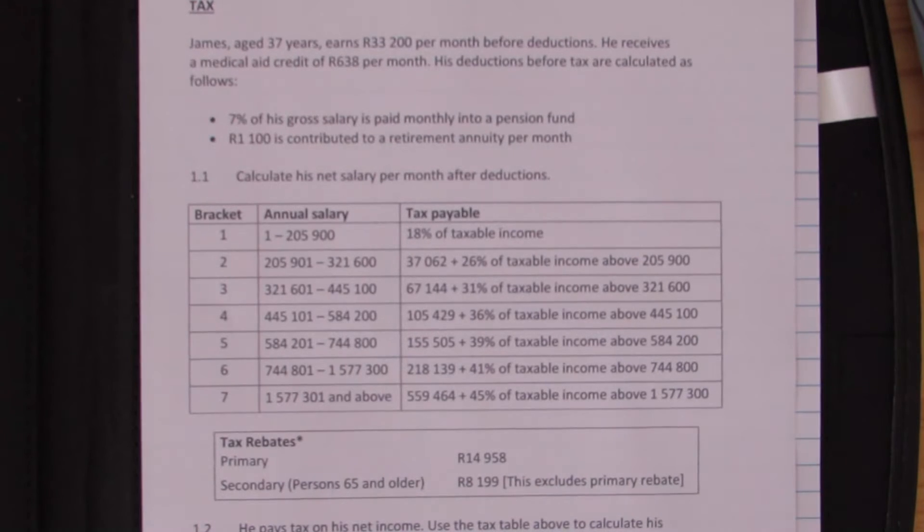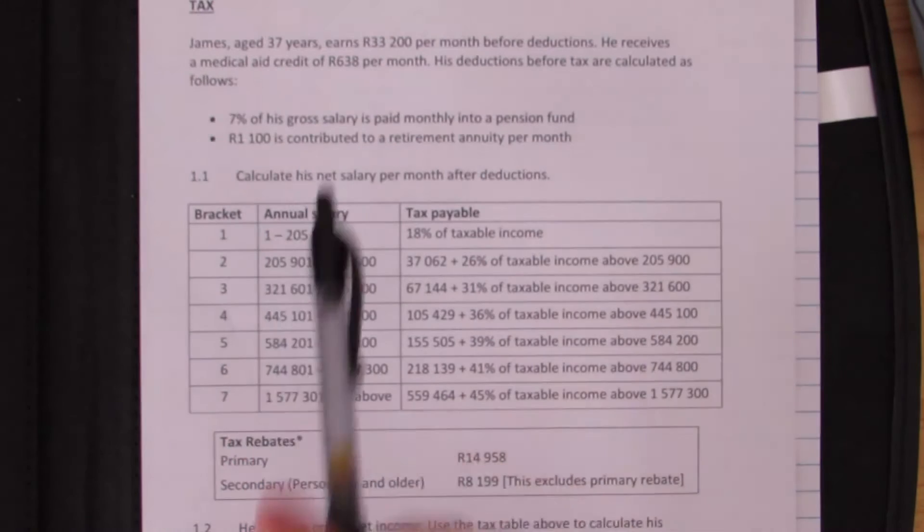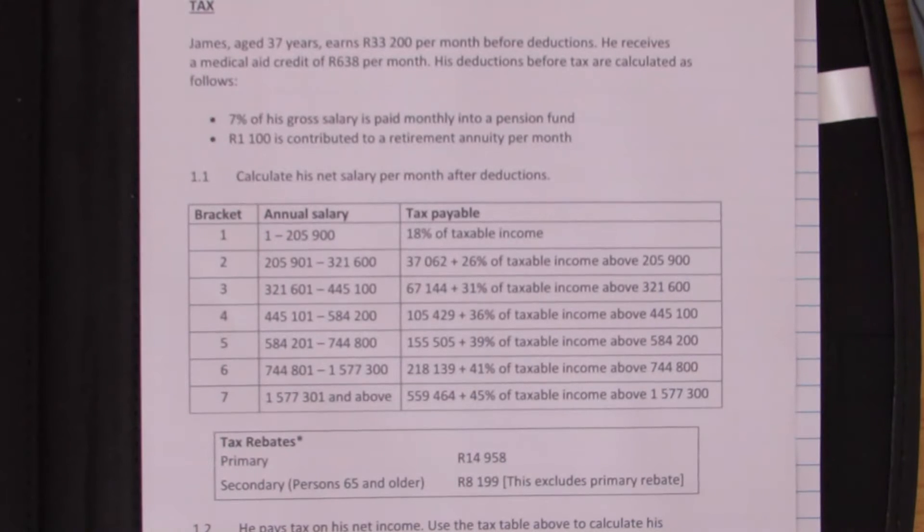James, age 37, earns 33,200 rand per month before deductions. He receives a medical aid credit of 638 rand per month, that would be the medical aid credit or rebate for two individuals, the principal member of the medical aid and one dependent. His deductions before tax are calculated as follows: 7% of his gross salary is paid monthly into a pension fund, and 1,100 rand is contributed to a retirement annuity per month.